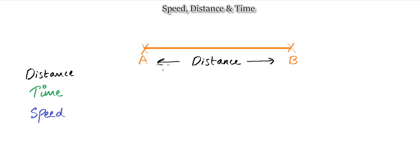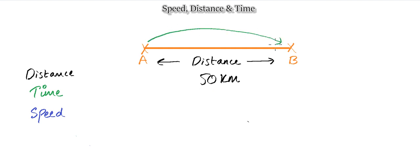Let's say our distance here is 50 kilometers. Moving on to the next term: time. That's how long it takes to get from point A to B — how long it takes to cover this 50 kilometers of distance. Let's say that takes two hours, so two hours would be the time it takes to cover this distance.